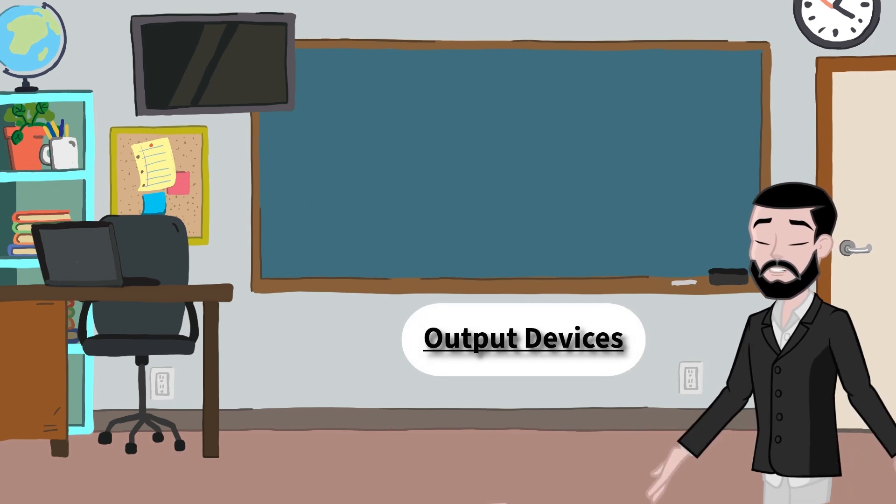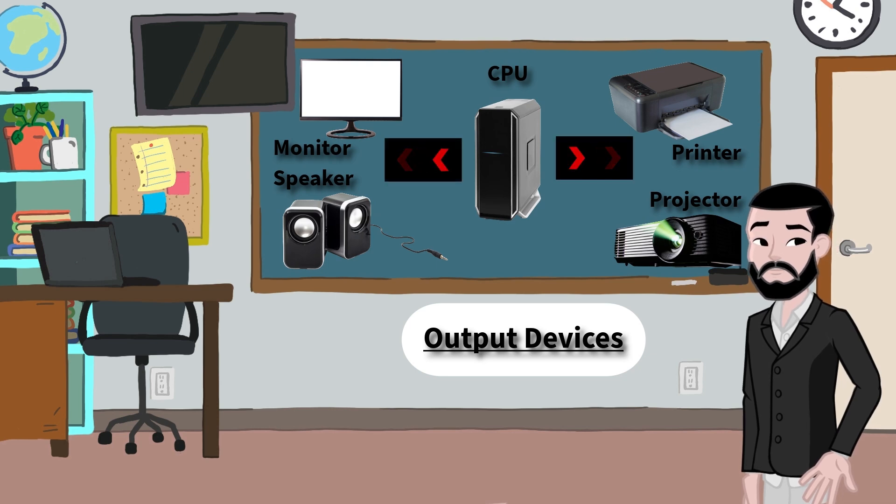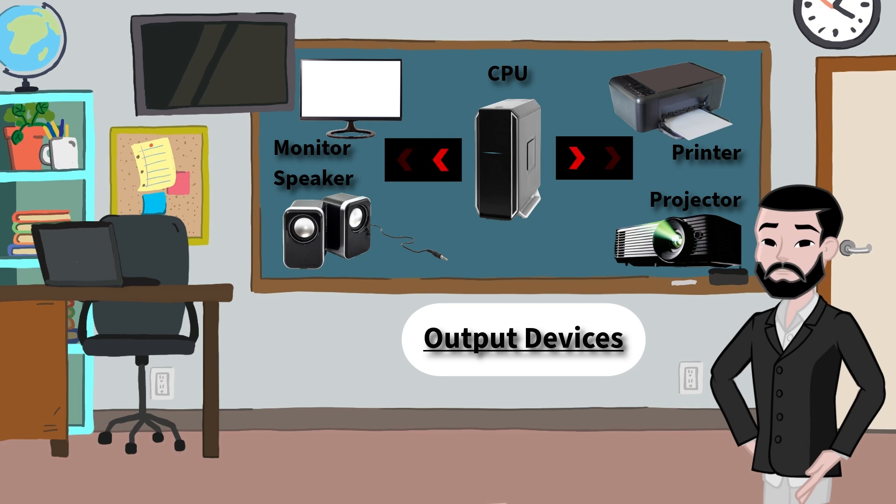Now let's flip the story and talk about output devices. These show us what the computer is doing or thinking. Once the computer understands your input, it sends the results out so you can see, hear, or touch them. That's output.